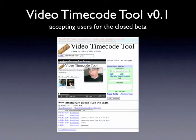Then you'll be taken into the Video Timecode Tool. This is where you can create annotations and adjust the times of the notes that you'd like to comment on. You'll get to play around with it a lot as a beta user.